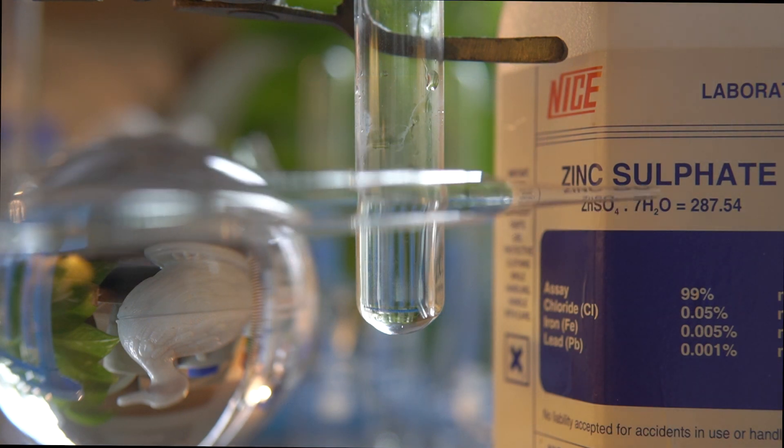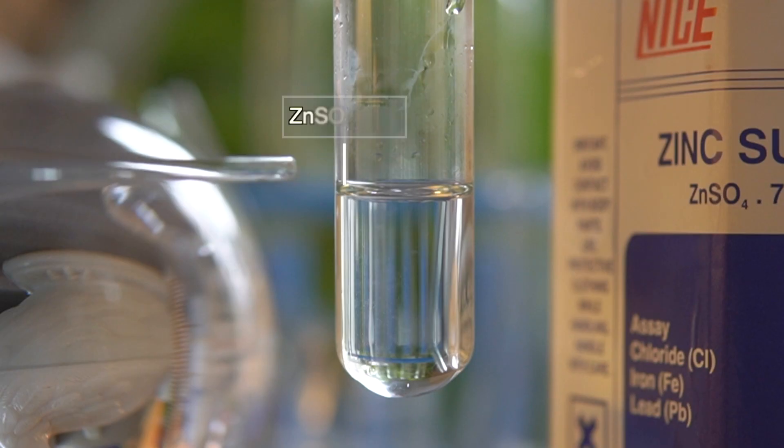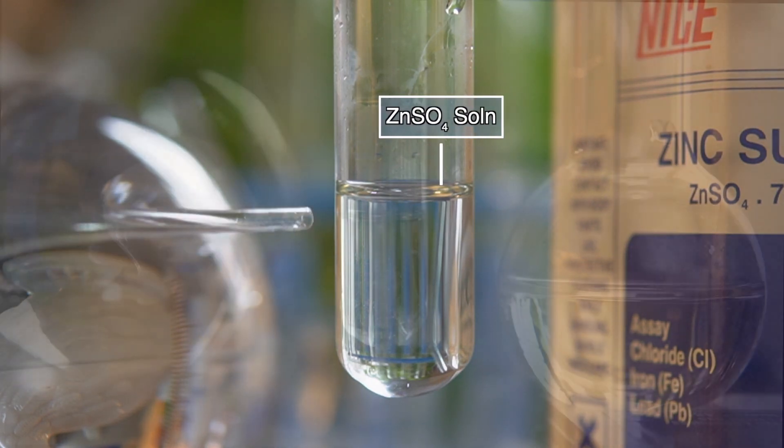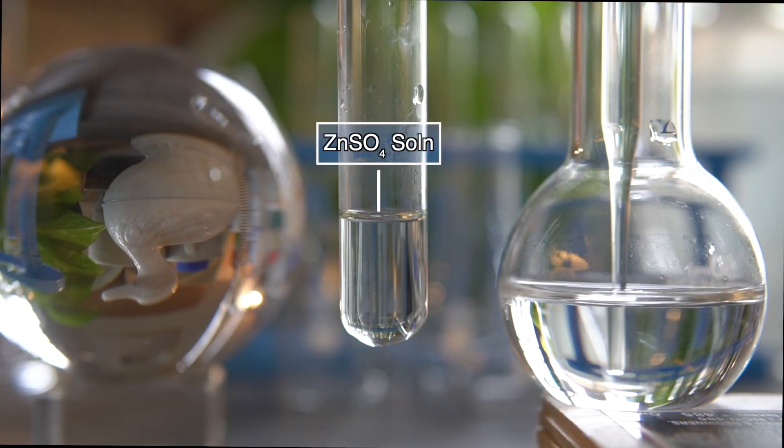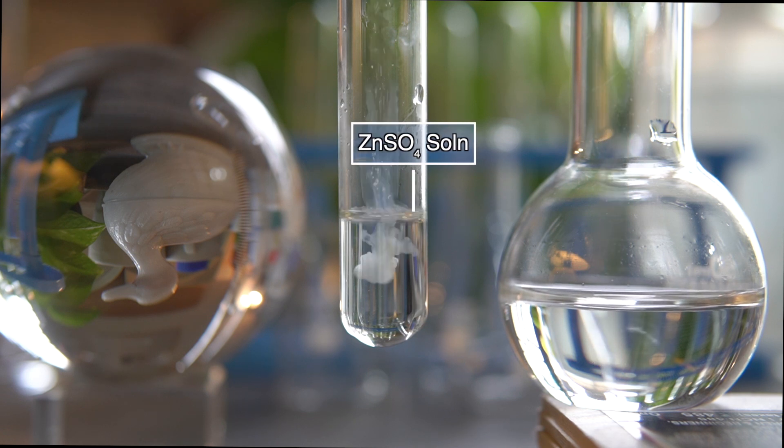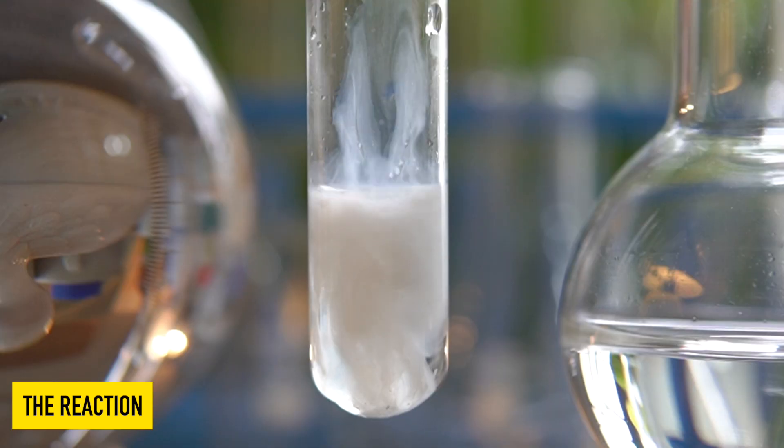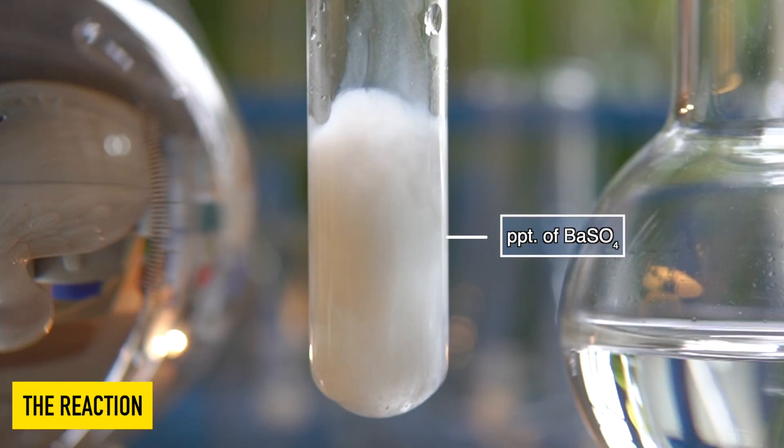To initiate the chemical reaction, we will take some clear solution of zinc sulfate into this test tube. Now we will add the clear solution of barium chloride dropwise on zinc sulfate solution slowly and observe the effects.